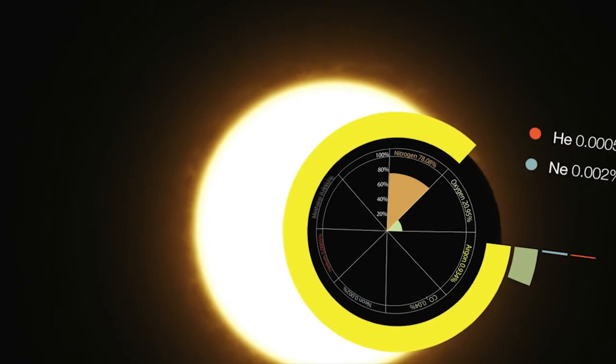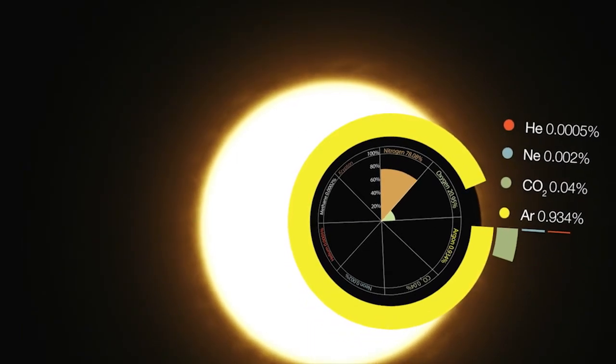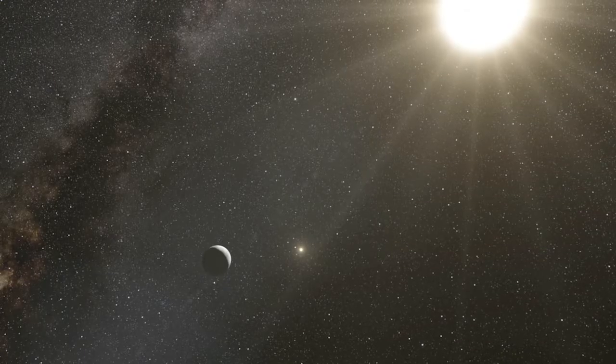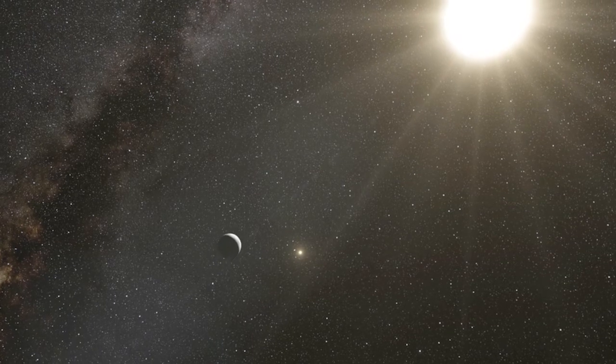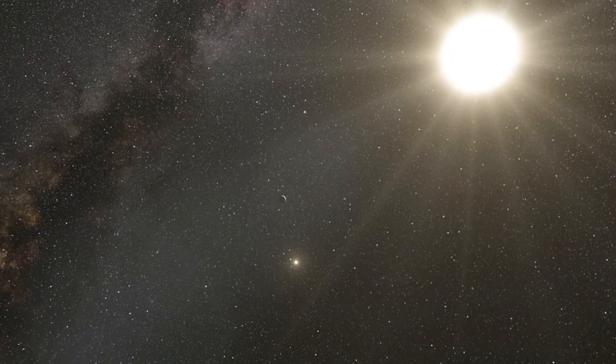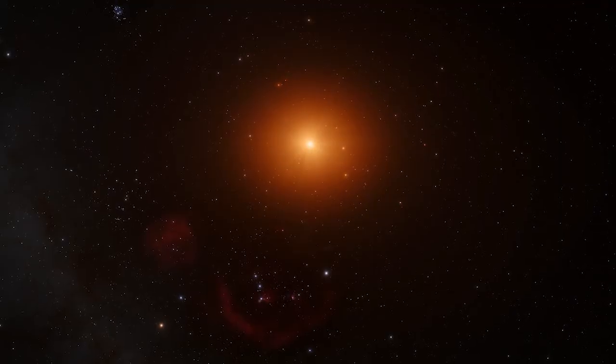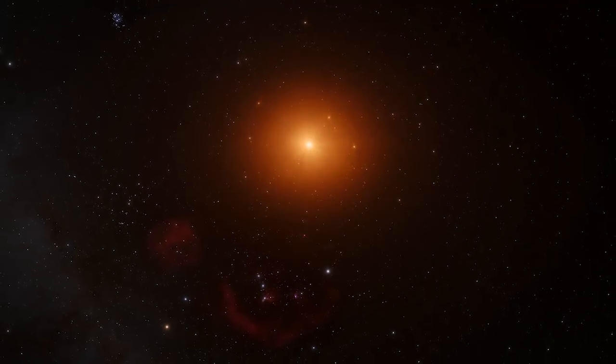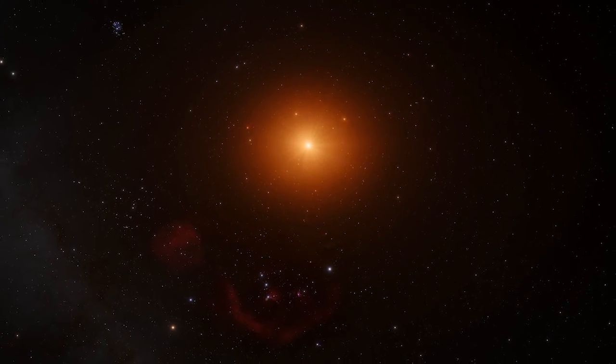To date, astronomers have used Hubble to observe the atmospheres of gas-giant planets that transit their stars. But terrestrial planets are much smaller objects and their atmospheres are thinner. Therefore, analyzing these signatures is much harder.